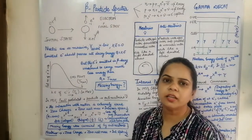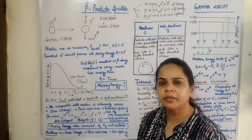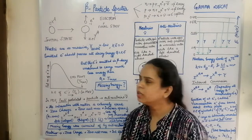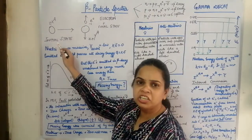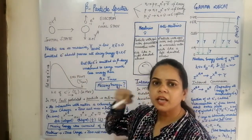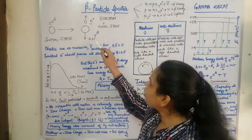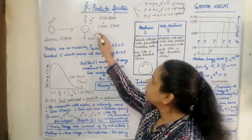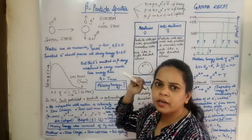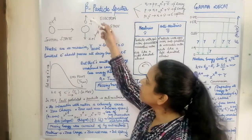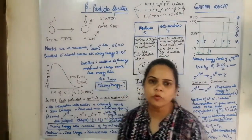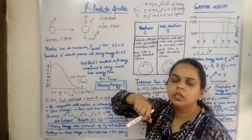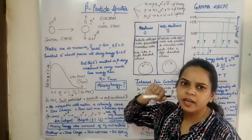Let us study about the beta particle decay and how it happens. If we suppose we have a parent nucleus ZXA which is in its initial state and at rest, it disintegrates to form a daughter nucleus and an electron. The daughter nucleus is recoiling — called the recoil nucleus — and the electron is also moving. For conservation of momentum, they both move in opposite directions.